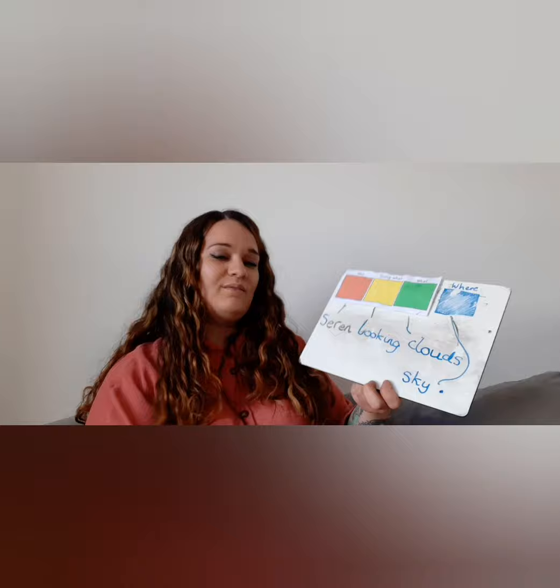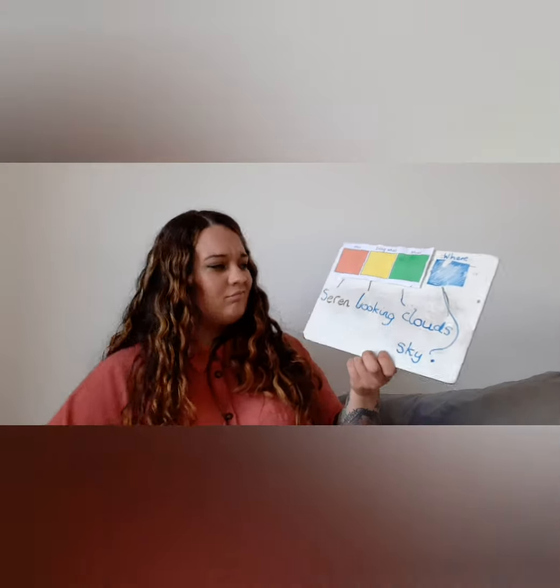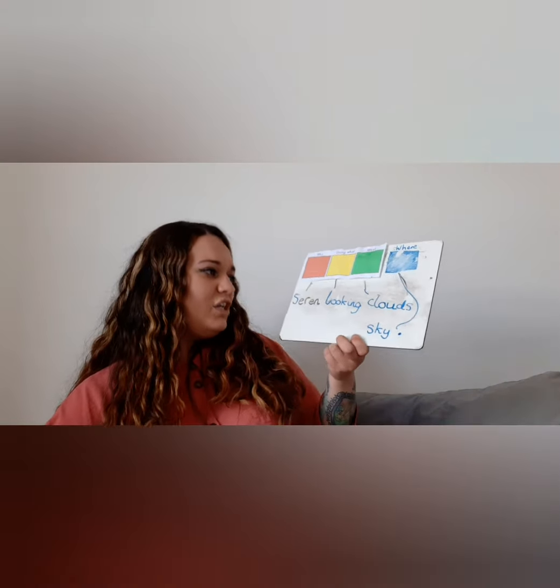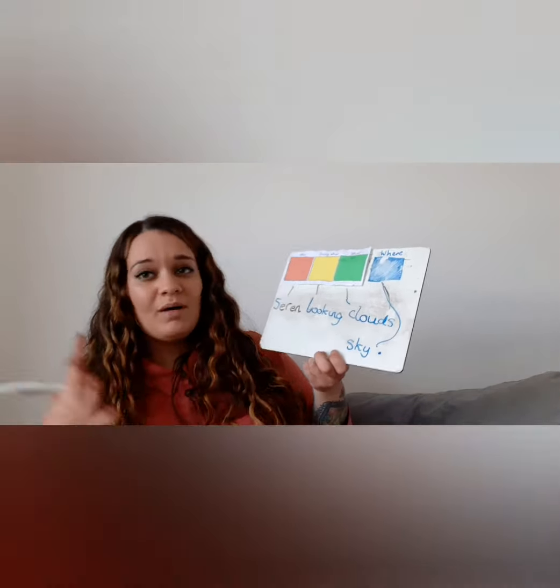Where are the clouds? Are they in our bedroom? No. Are they on the wall? They're in the sky. Sky. We've written that word quite a few times now, haven't we — sky. It's always good to practise. Sky. Then what do we need at the end? I'm going to do it now because I always forget, and you always have to tell me. Full stop. I'm going to add it now so I don't forget. Seren looking clouds sky.